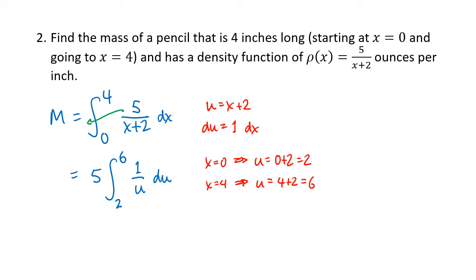So now I've got an integral that I can do. The antiderivative of 1 over u is the natural log of the absolute value of u. And we're going to plug in 6 and plug in 2 and subtract. So that's going to be 5 times the natural log of 6 minus the natural log of 2. Now we could leave our answer like that. Typically, when we have a natural log minus another natural log, we'll want to try to combine those together. Using our log rule, which tells us that this is going to be 5 times the natural log of 6 divided by 2, also known as 5 times the natural log of 3. Our units are ounces per inch, so this will be 5 times the natural log of 3 ounces.